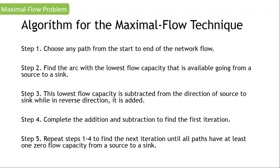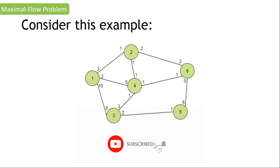Here are our steps in the maximal flow technique. Step one: choose any path from the start to end of the network flow. Step two: find the arc with the lowest flow capacity available going from a source to a sink. Step three: this lowest flow capacity is subtracted in the direction of source to sink, while it is added in the reverse direction. Step four: complete the addition and subtraction process to find the first iteration. We repeat steps one to four until all paths have at least one zero flow capacity from a source to a sink.